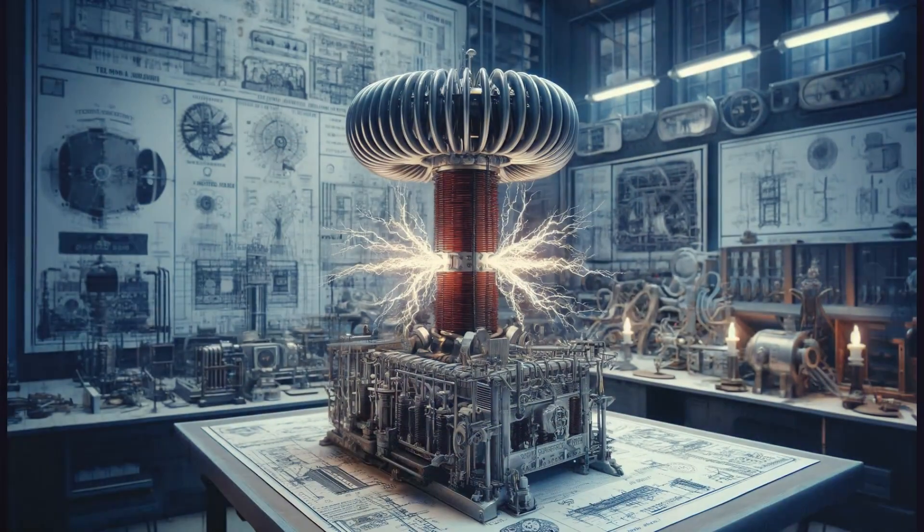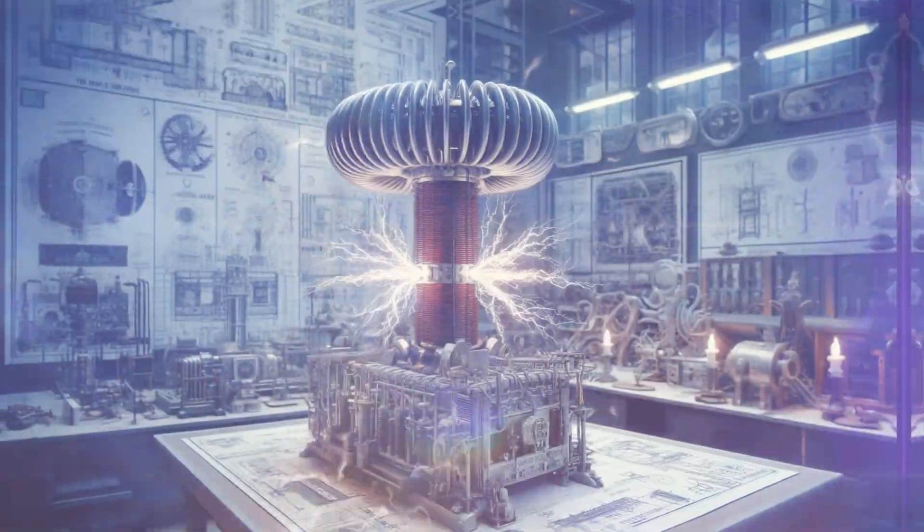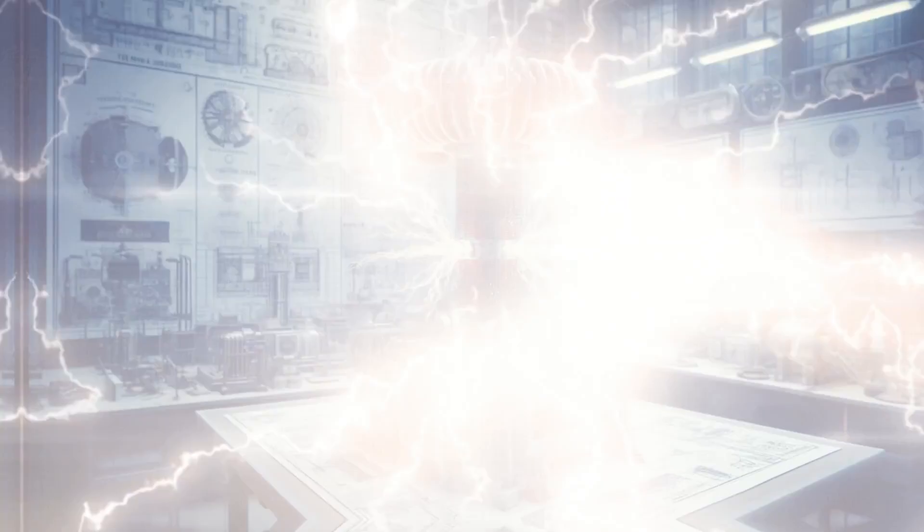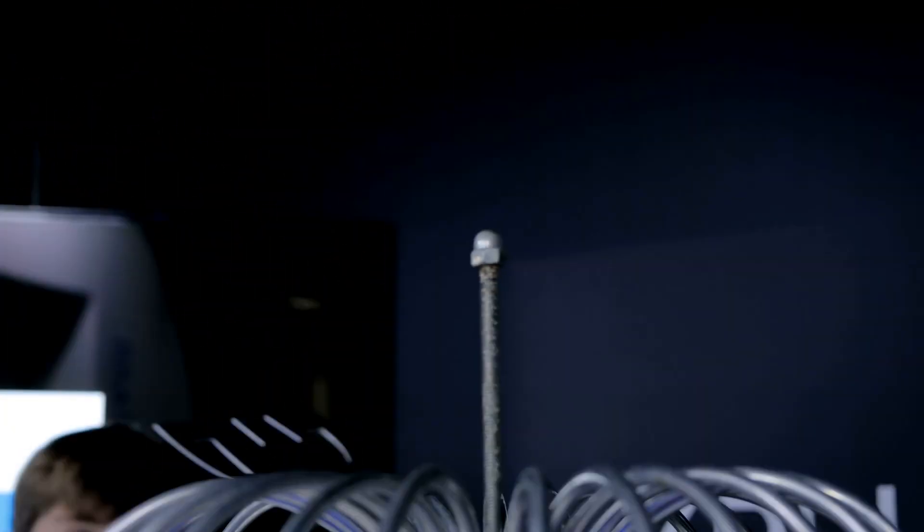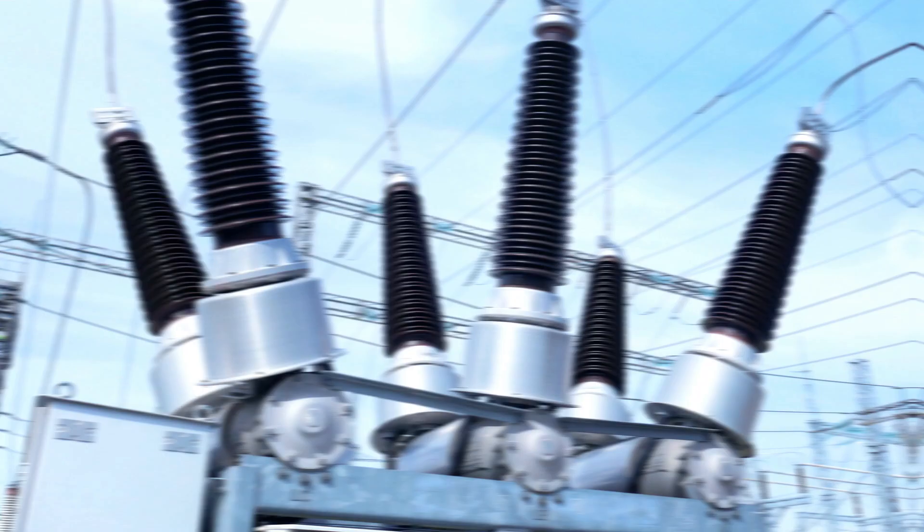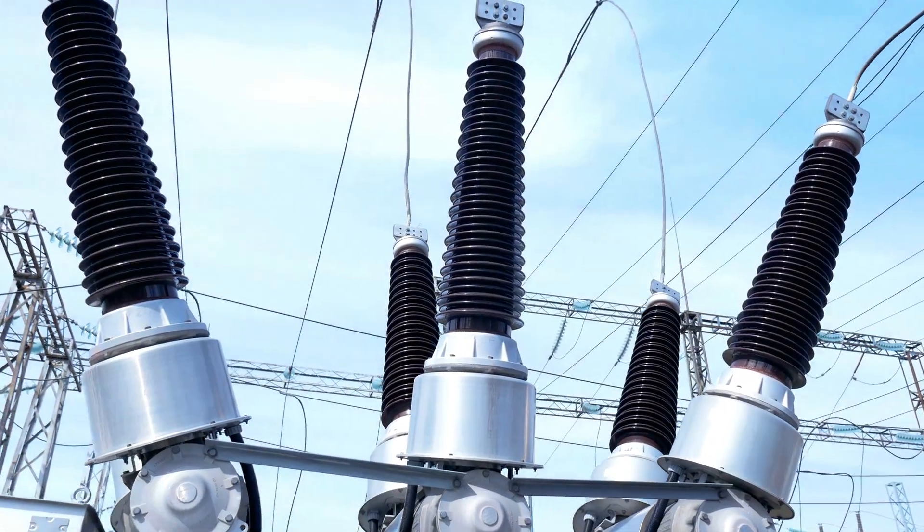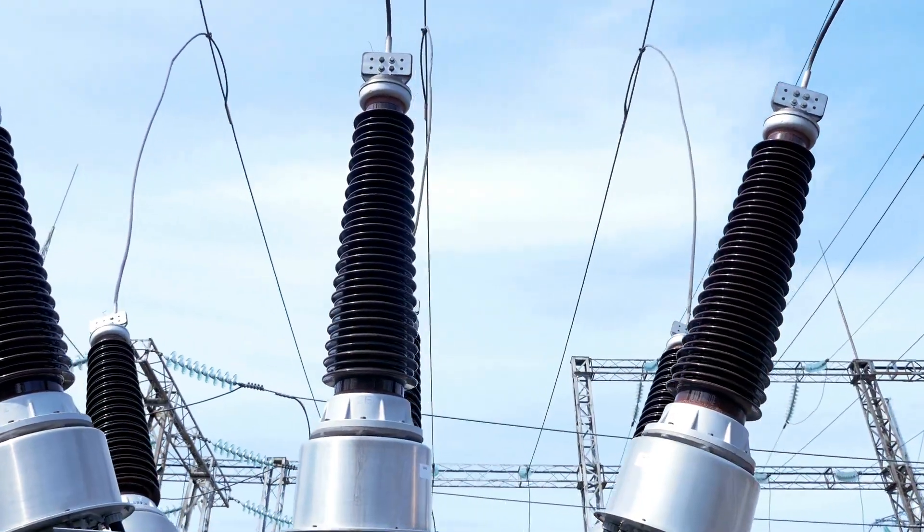At the heart of this fearsome device was a high voltage generator. Picture a Tesla coil, towering and alive with electrical arcs, crackling with energy. But what does high voltage really mean? Voltage, measured in volts, is like the strength of a push. A weak push moves something slowly, while a strong push moves it quickly and forcefully.